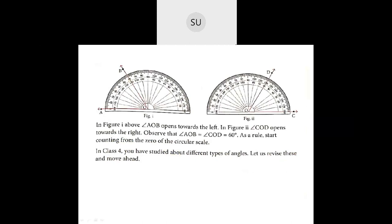Here they have taken an example. In figure one, angle AOB opens towards the left. In figure two, angle COD opens towards the right. If you observe, angle AOB and COD are both 60 degrees. As a rule, start counting from the 0 of the circular scale. When the arms open on the left side, start with the outer scale — so 0 is on the outer scale, and OB is at 60. Same way, since COD opens on the right side, start with 0 on the inner scale — 10, 20, 30, 40, 50, 60 — so CD is 60 degrees.